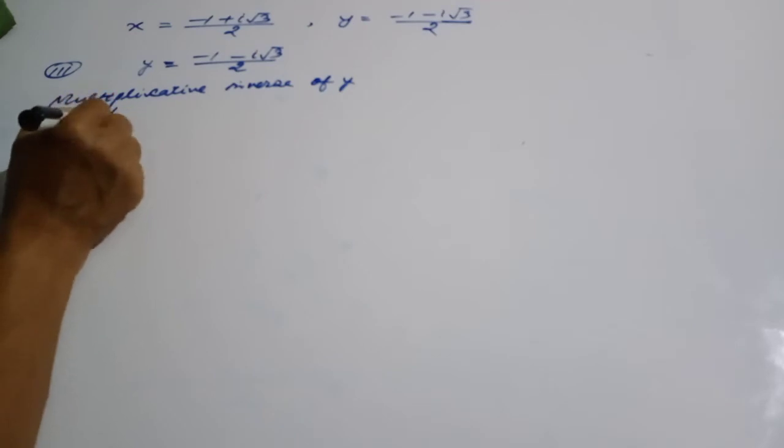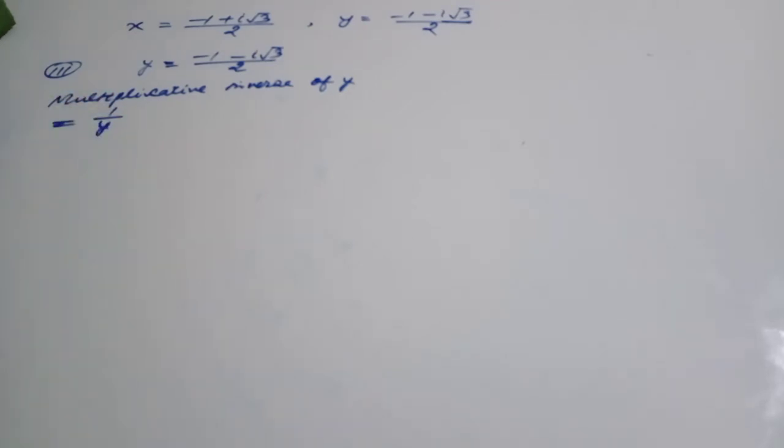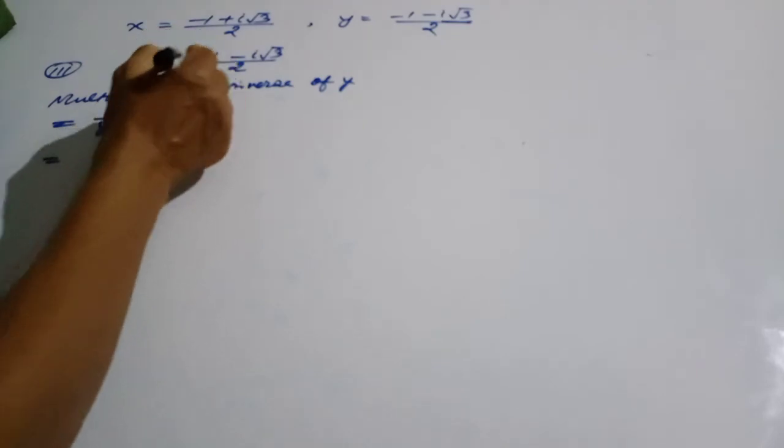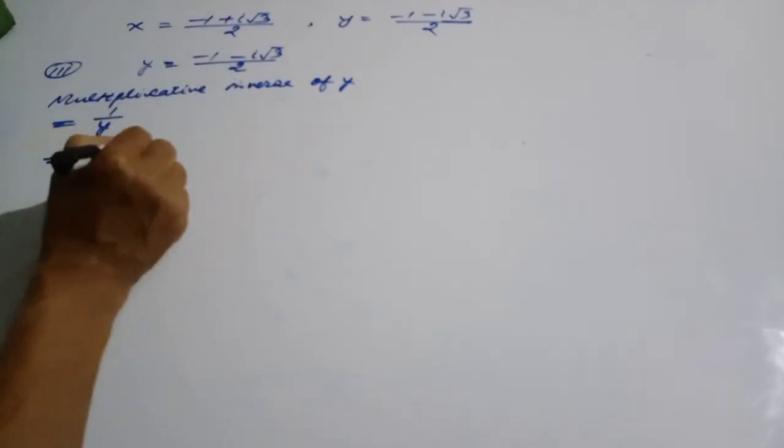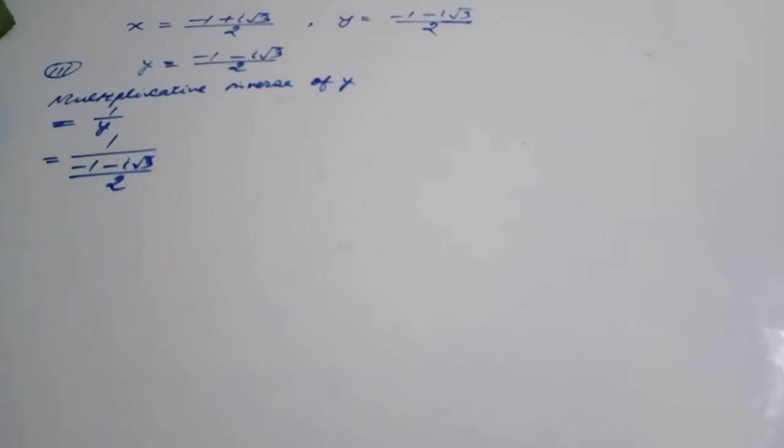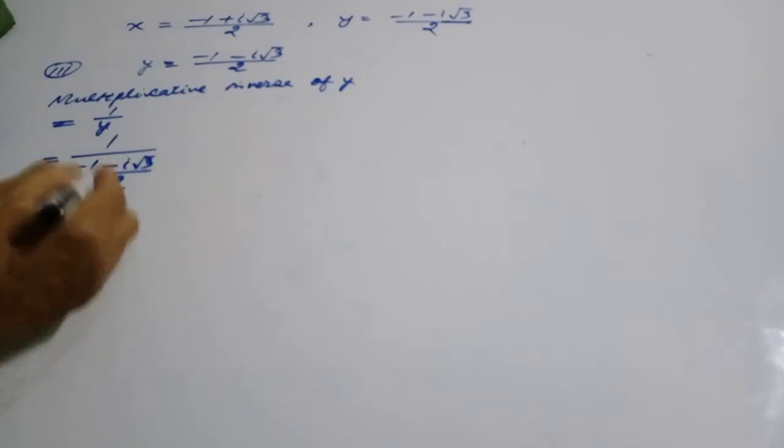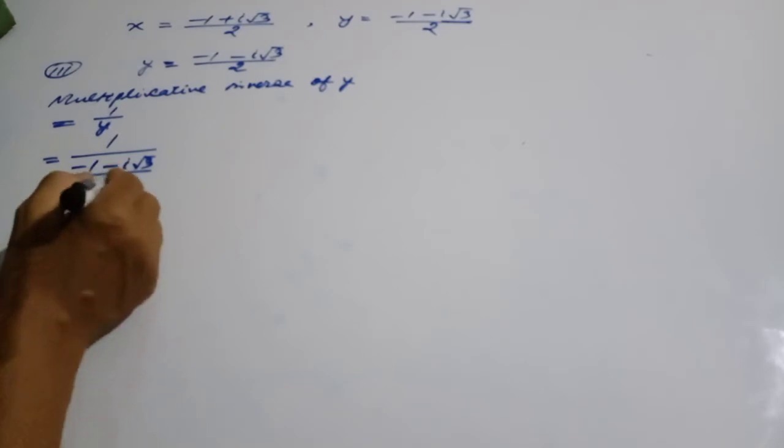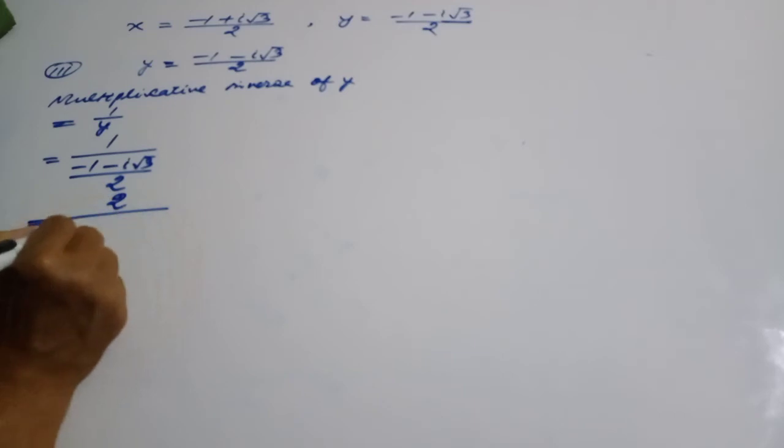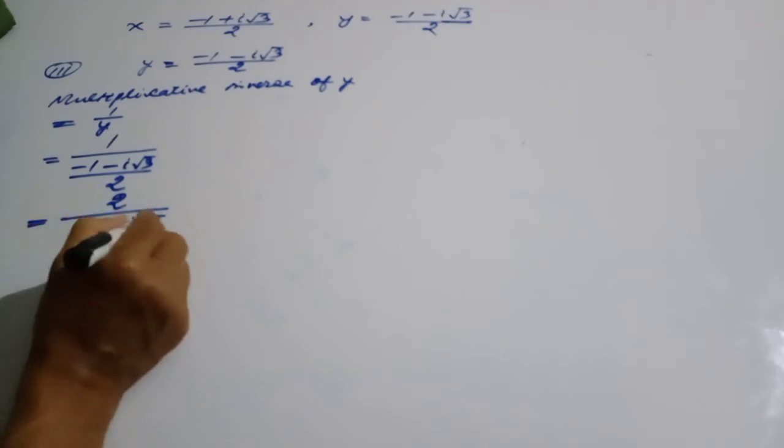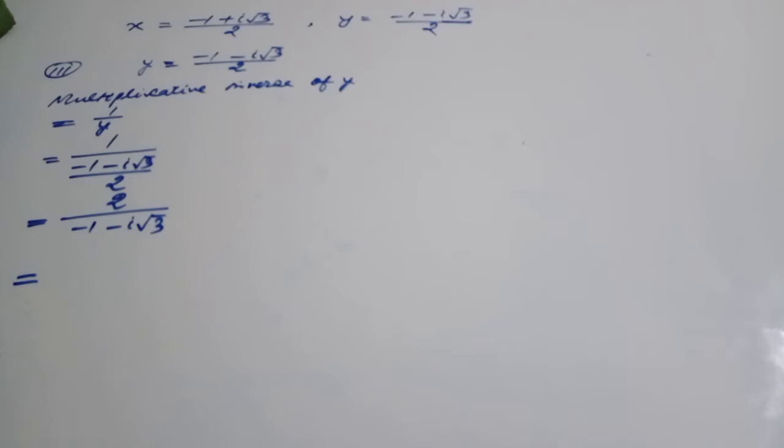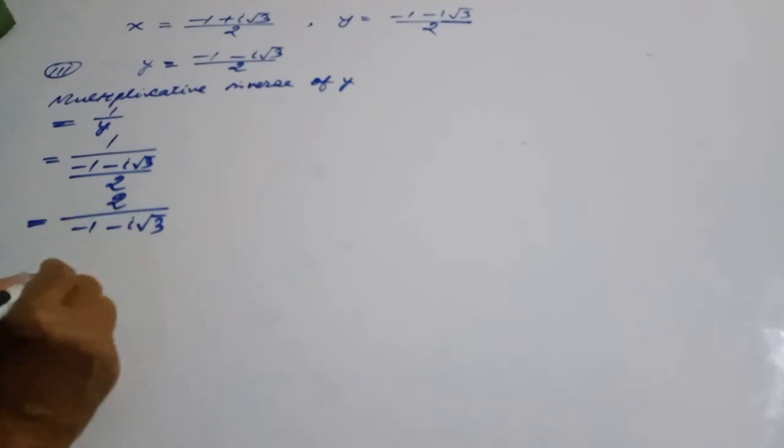1 by y, 1 by 1, 1 by 1 with the level coming. Y will you put that value? Y value minus 1 minus i root 3. This divided by 2. It will give a moment.